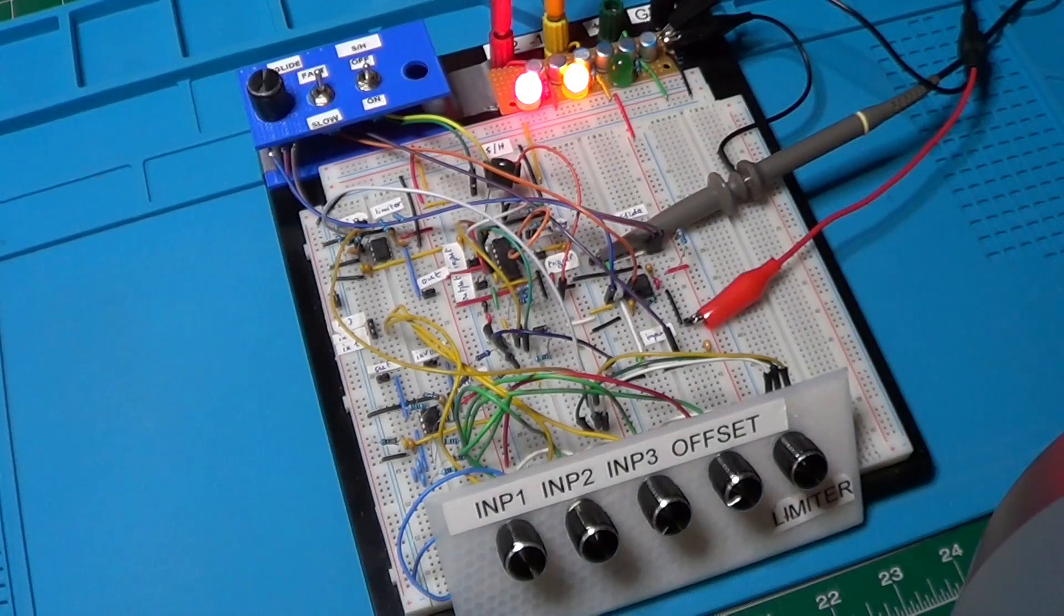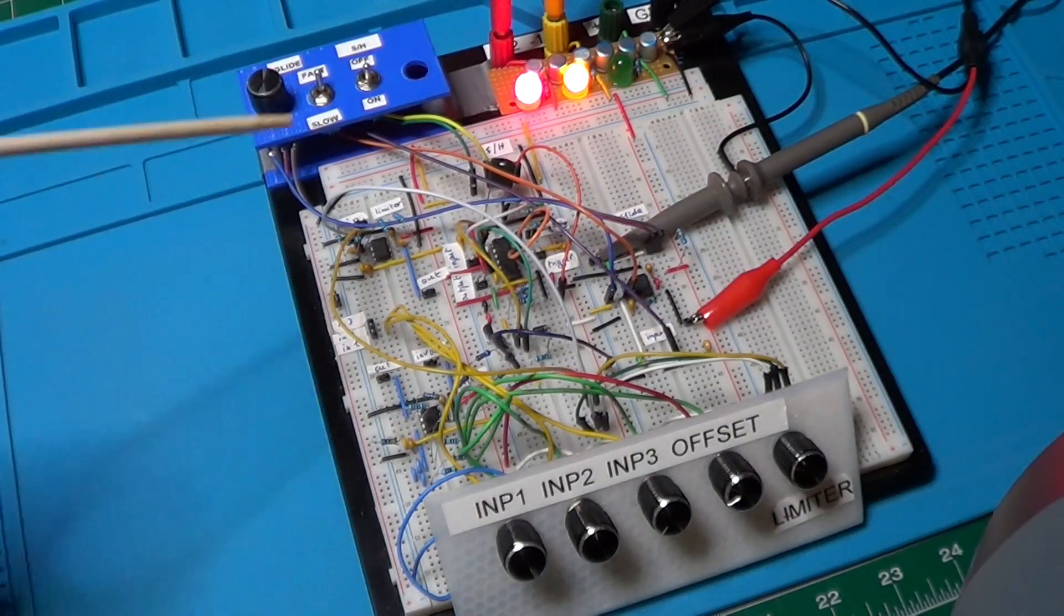Here is the breadboard we have already used for the previous elements of the CV processor. All the circuits from the previous episodes are still installed on the board.